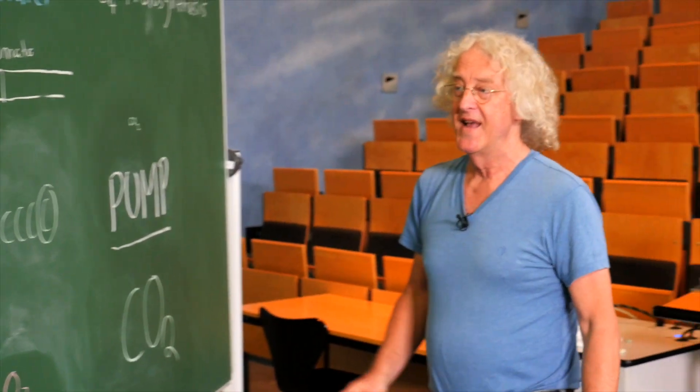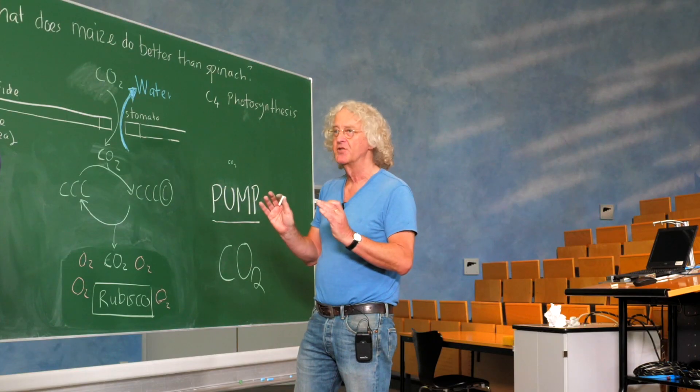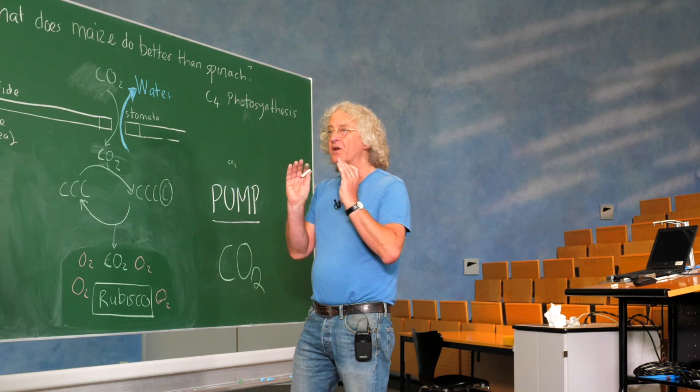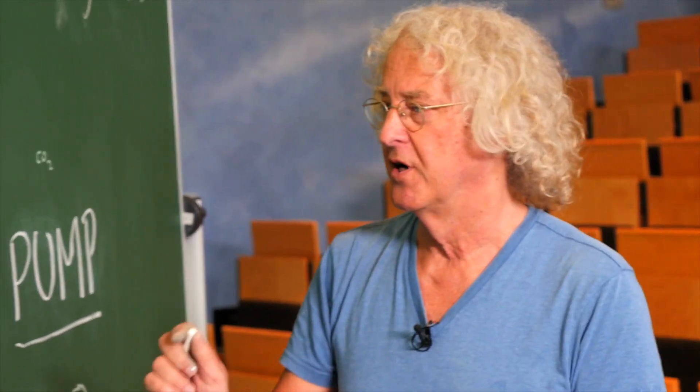Now the anatomy. Most plants carry out photosynthesis in one cell type. Maize does it by combination of two cell types.